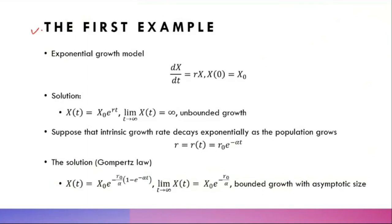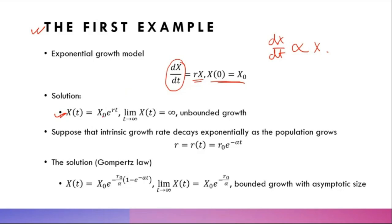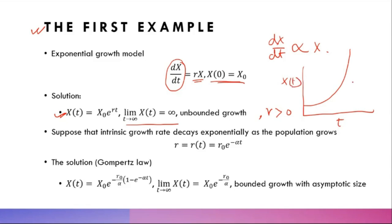The first example in any mathematical biology setup is the exponential growth model, where the change in population size is directly proportional to the existing population size: dx/dt = rx, with initial condition x(0) = x₀. If r is positive, the population grows exponentially to infinity as t tends to infinity.